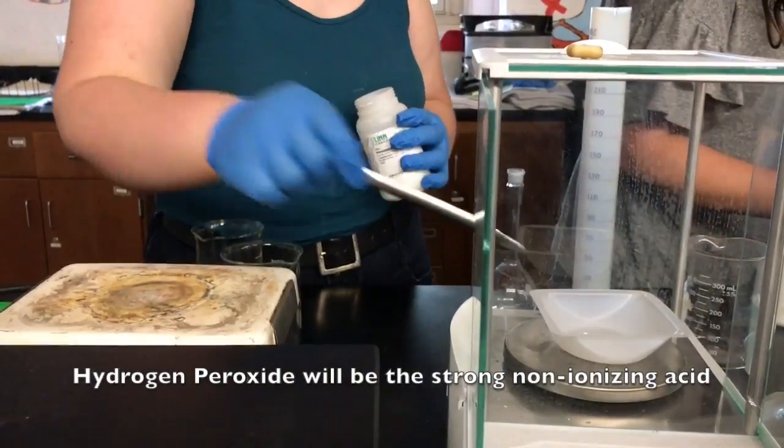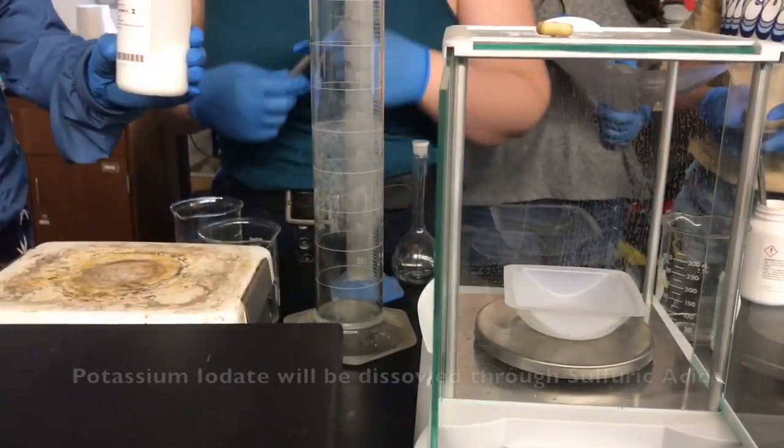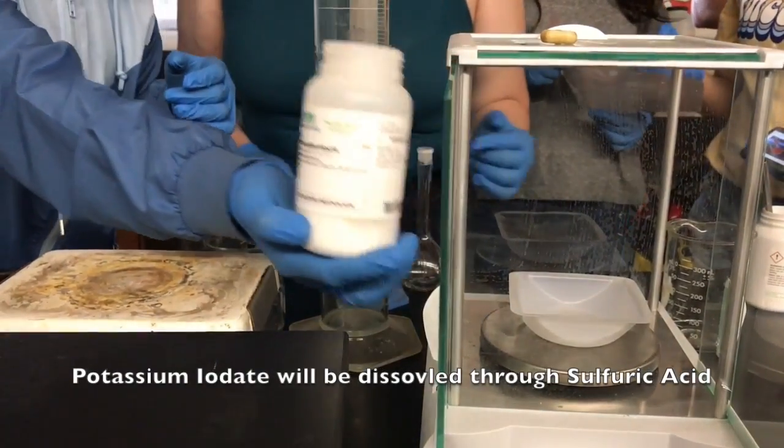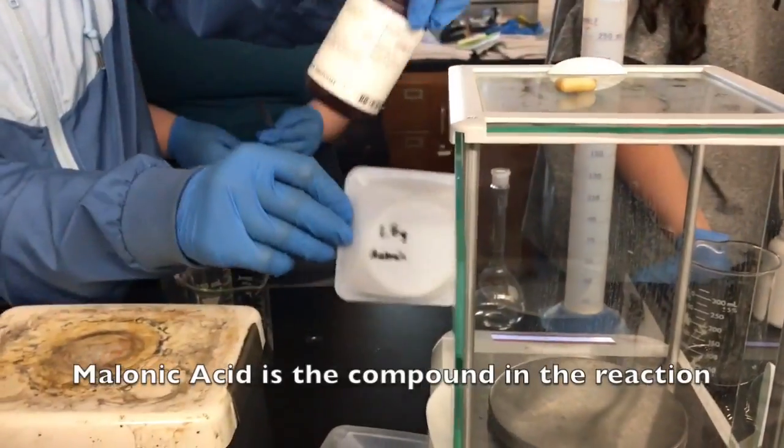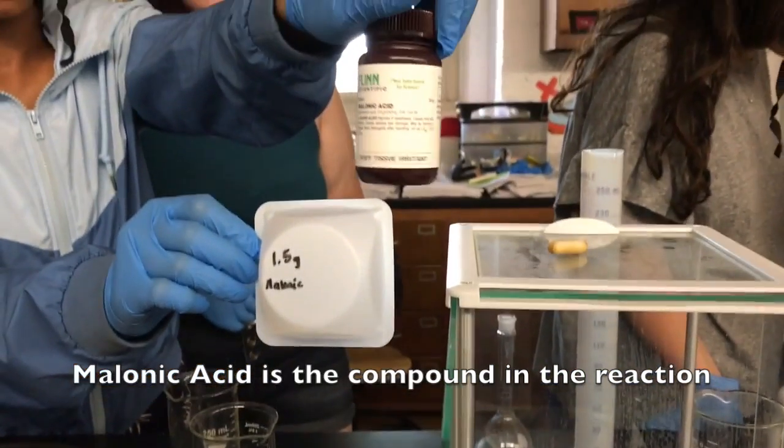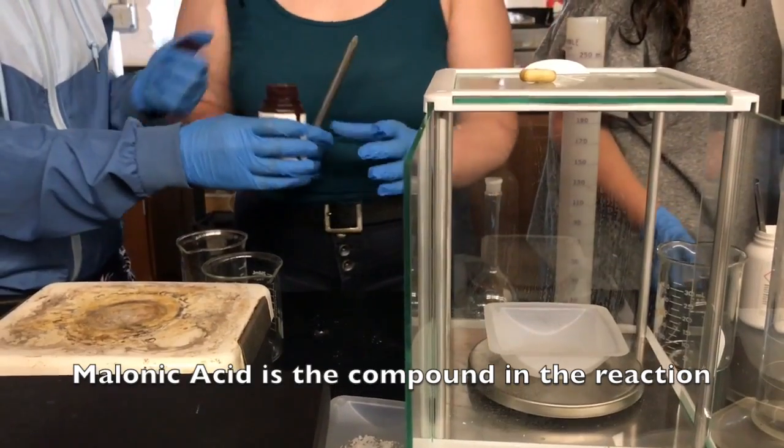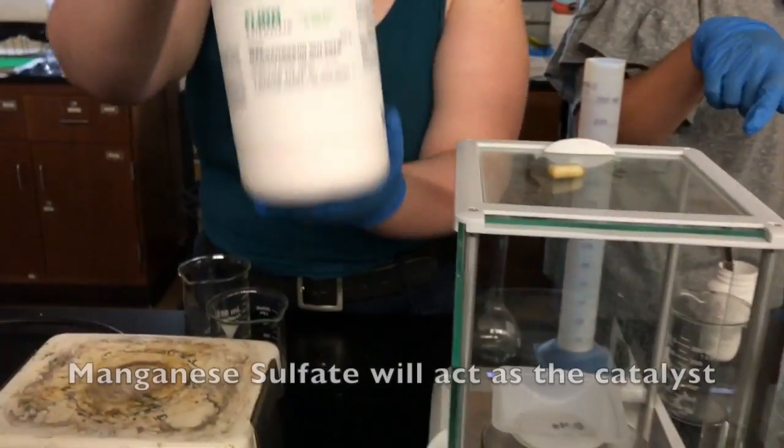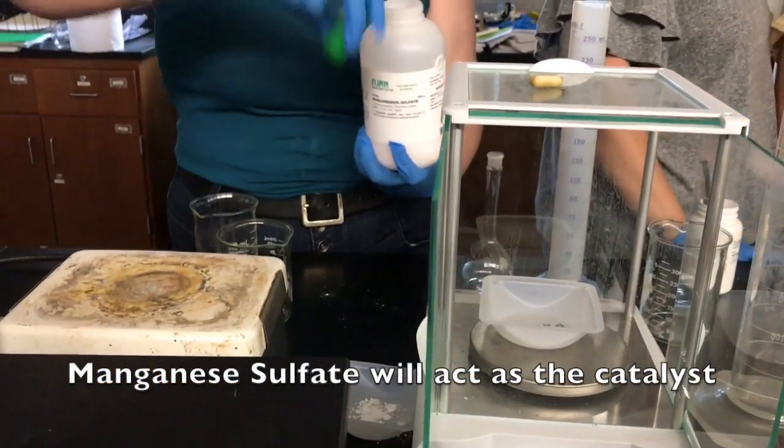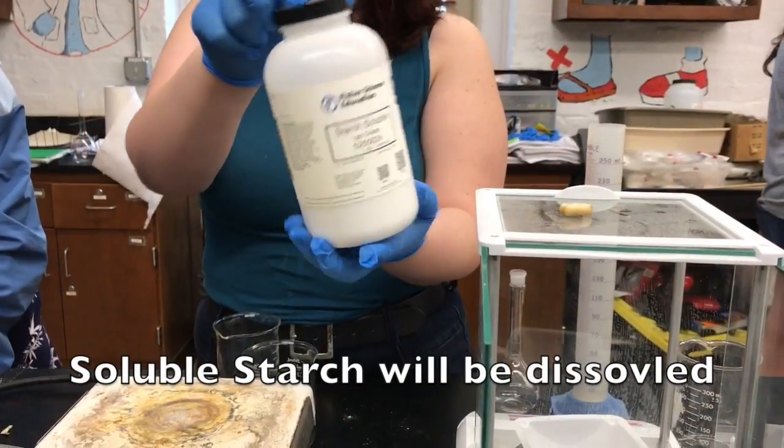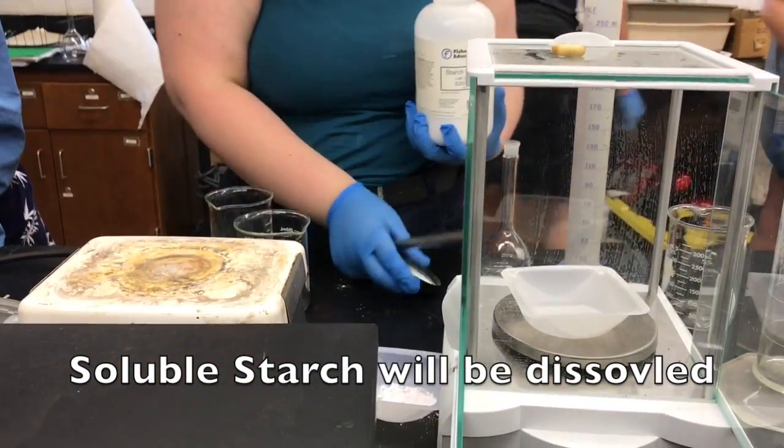First, I'm having Shisha Tabitha measure out the amount of grams of each ingredient we will be using. Hydrogen peroxide and sulfuric acid are liquids, so they will be measured at a later time. First, she is measuring out 1.5 grams of malonic acid, then she will be measuring out 0.4 grams of manganese sulfate, and finally she will be measuring out 0.1 grams of soluble starch.